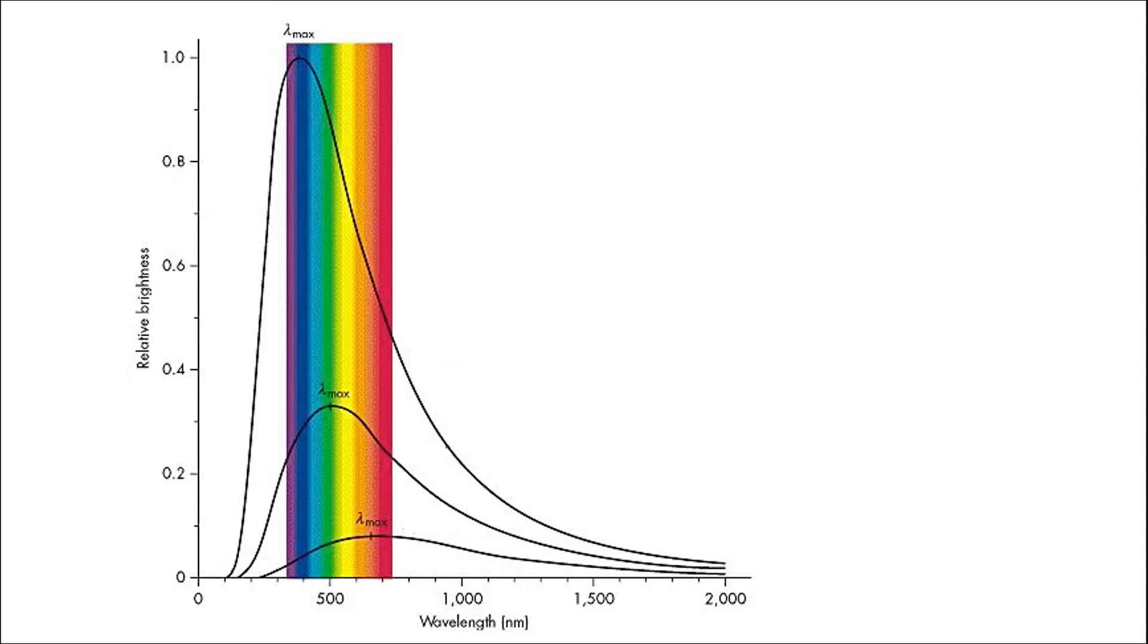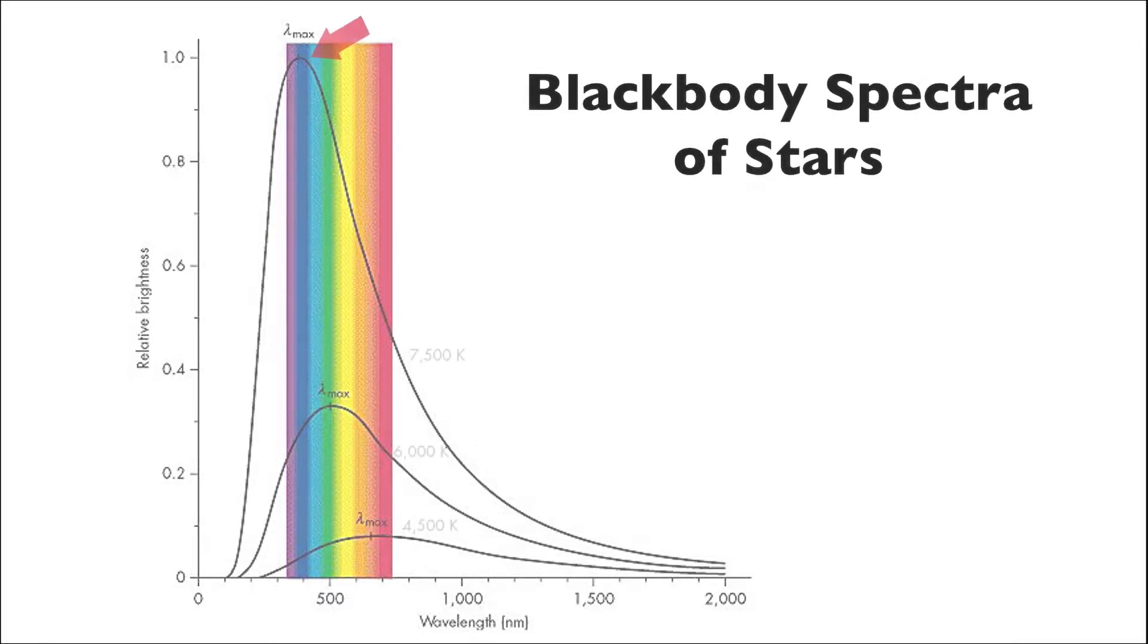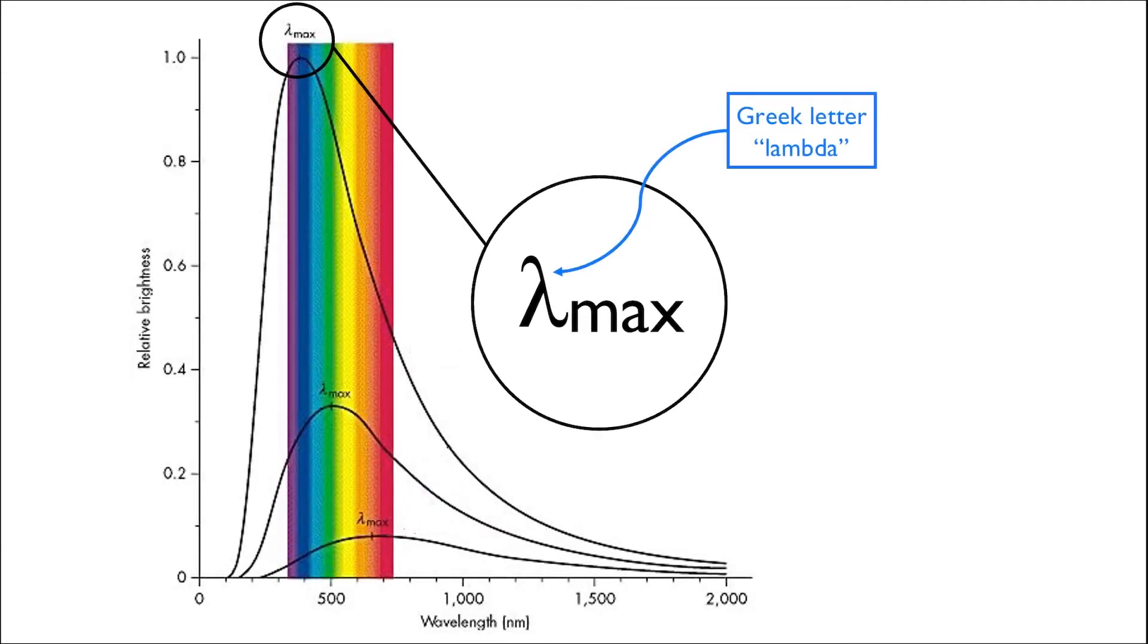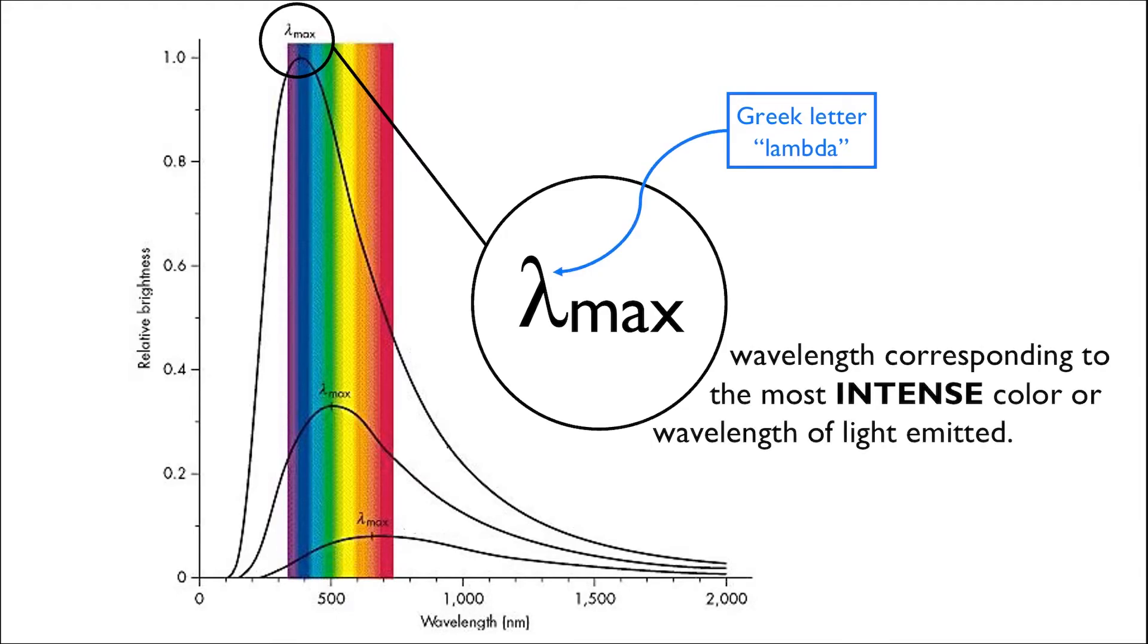Here are three different blackbody curves, aka blackbody spectra, emitting preferentially in the visible portion of the electromagnetic radiation spectrum. So they may as well be the blackbody spectra of stars. The peak of each spectrum occurs at a different wavelength, so we refer to that wavelength as the lambda max of the star. This is the wavelength associated with the most intense color of light emitted. It is the wavelength associated with the peak of the graph.